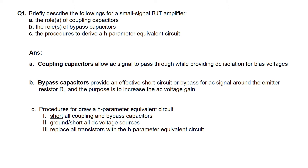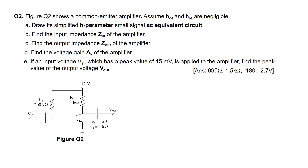Now let's go on to question 2. In question 2 we are given this common emitter amplifier circuit. Part A of the question is to draw the simplified H-parameter small signal AC circuit. We'll do this on the next page.